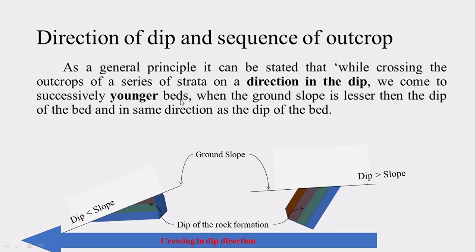When the ground slope is less than the dip, you are moving towards the younger sequence — whatever rock you encounter will be successively younger. When the slope is greater than dip, the dip is lesser and slope is greater, so you move from the younger towards progressively older formations. When surveying a sedimentary formation, remember: slope greater than dip means you encounter successively older formations; dip greater than slope means you encounter younger formations, moving in the dip direction.